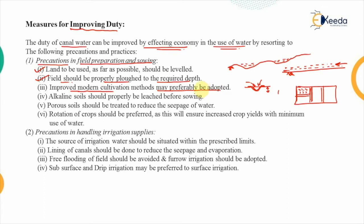Third, improved modern cultivation methods and the latest technology should preferably be adopted. Fourth, and importantly, alkaline soils should be properly leached before sowing. If a pH test shows the pH is greater than 7, the soil is alkaline. For such soils, the area is flooded and allowed to stand still so water percolates in; the accumulated salts rise to the top and are collected and removed before the sowing process.